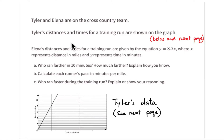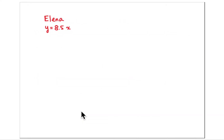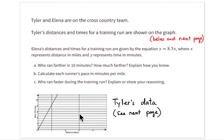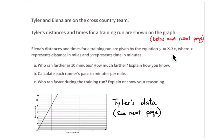Tyler's distance and times are shown in the graph, which is expanded larger on the next few pages. Elena's information is given by the equation y equals eight and a half times x, where x represents the distance in miles and y represents her time in minutes. So if she runs one mile, it takes her eight and a half minutes — that's her pace.